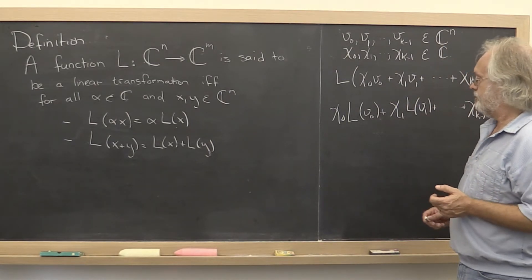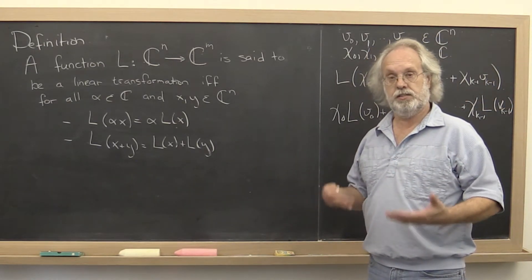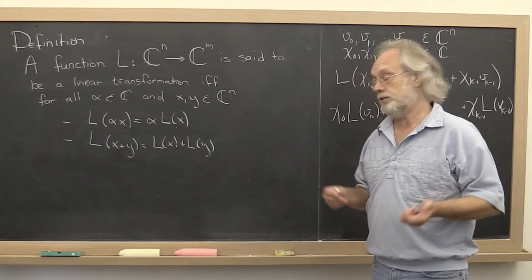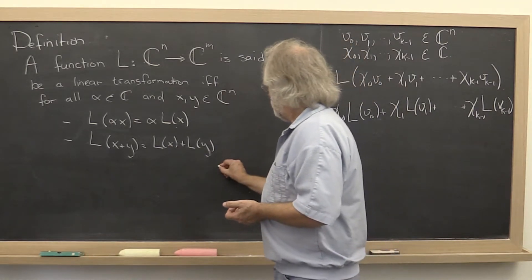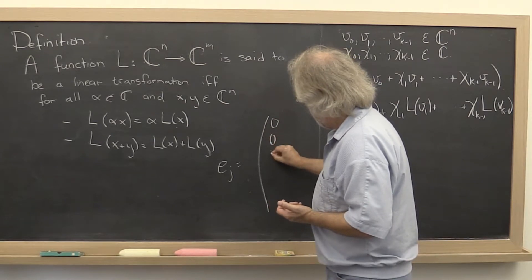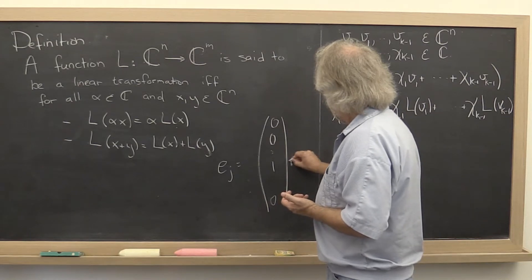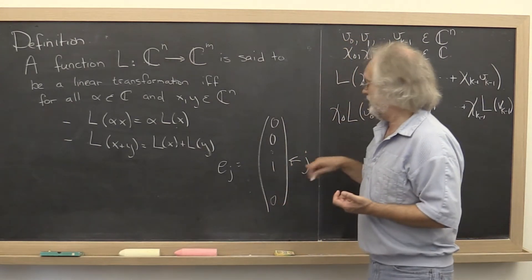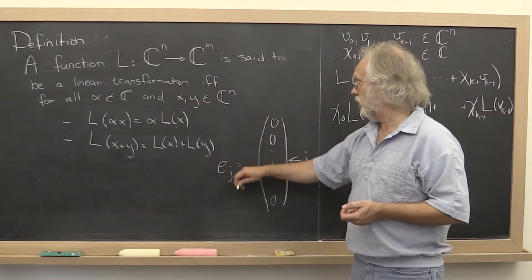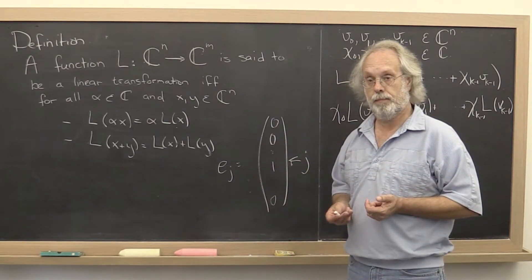Why? Well, there is a special set of vectors in Cn that are our friends. We call them the standard basis vectors. What are they? E sub j is the vector of all zeros with a 1 in the entry indexed with j. So E0 is 1 with all zeros, E1 is 0, 1 and then all zeros and so forth.